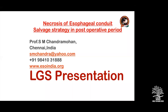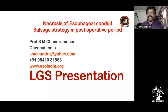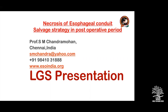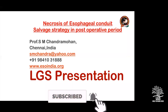The question was about retrograde dilatation — what are the actual indications? There are a few people who do it, and in Government Stanley Medical College they do it regularly and have published on it. The other question was about a short segment, and we have to do a short segment where the first conduit of choice will be jejunum — we'll do an anastomosis there.